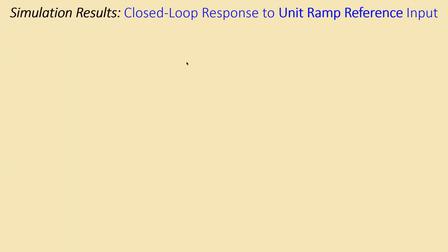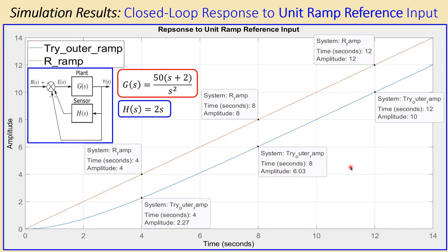Now let's then check the actual problem, which is actually the unit ramp reference input. This is then the unit ramp reference input. You can see the orange line here, which is the linear increasing line, and the blue line is actually the response.